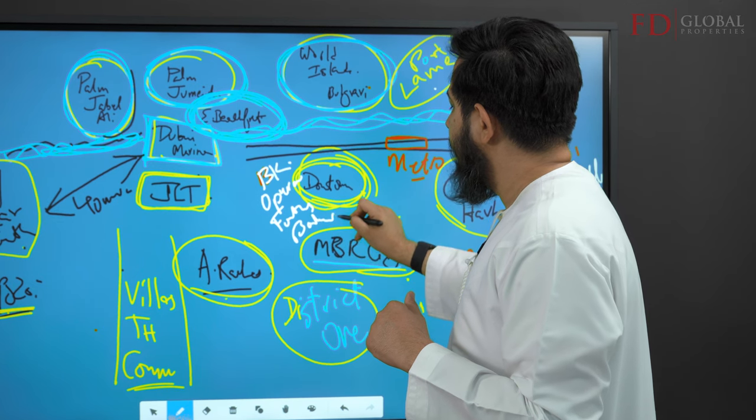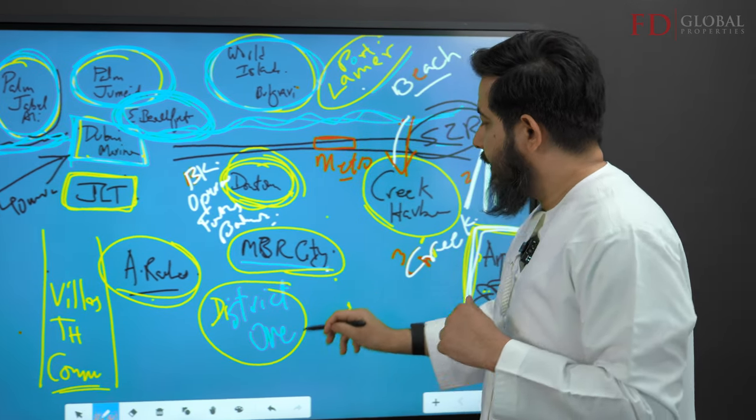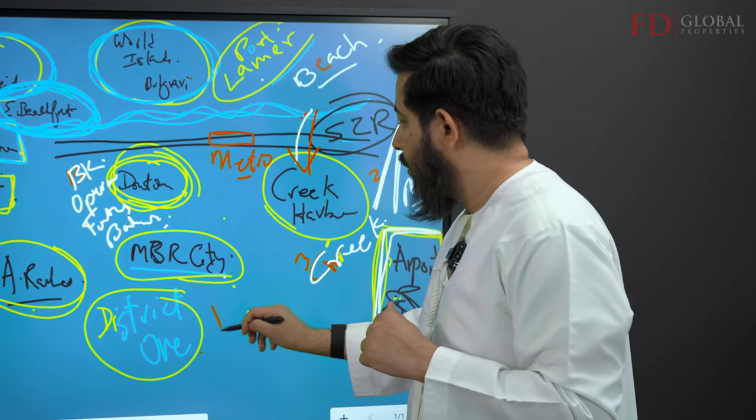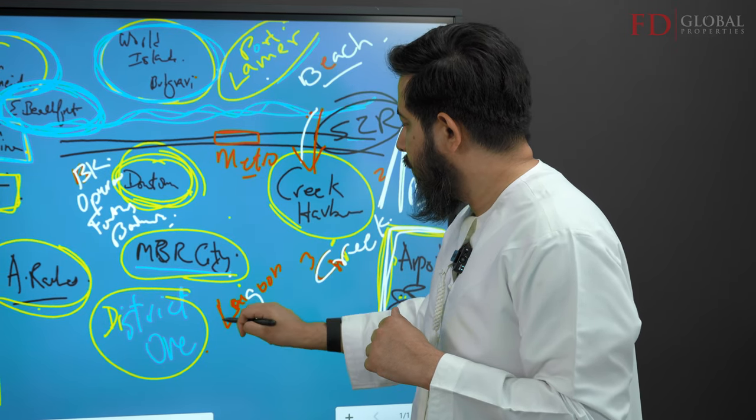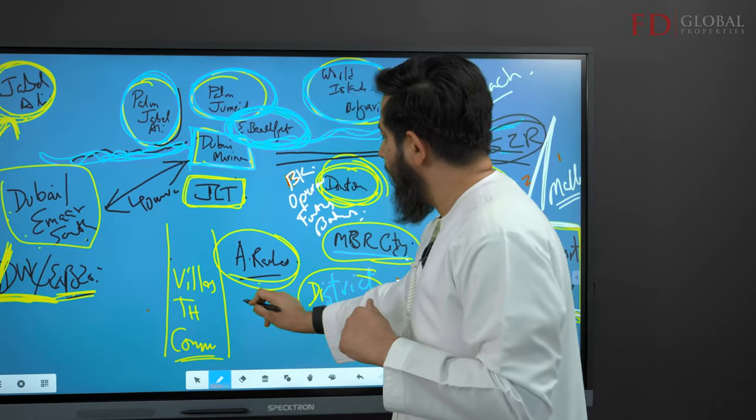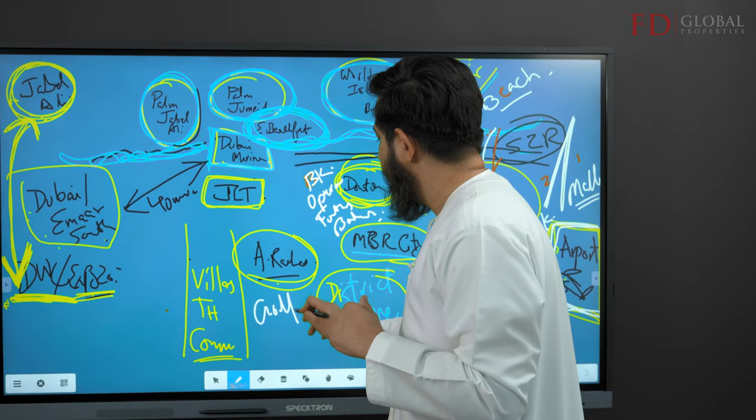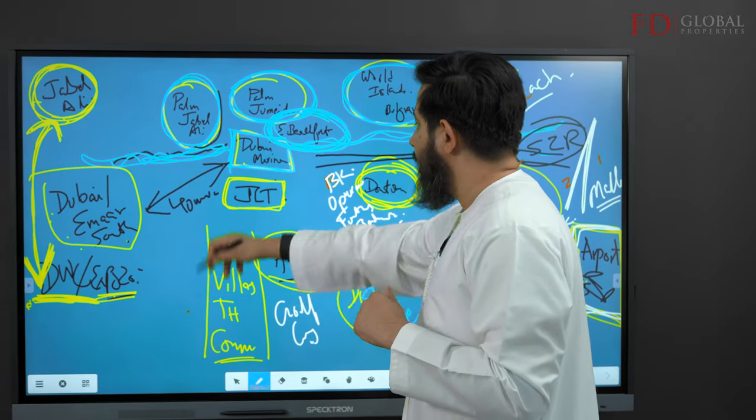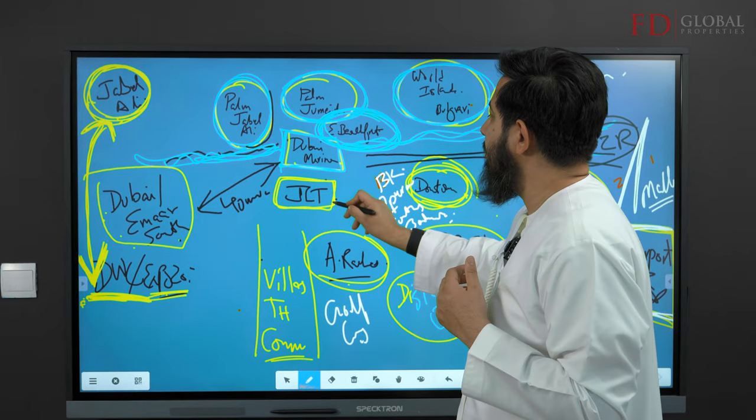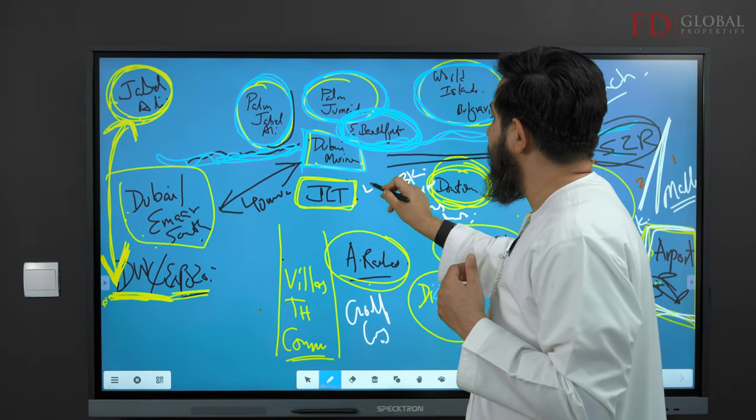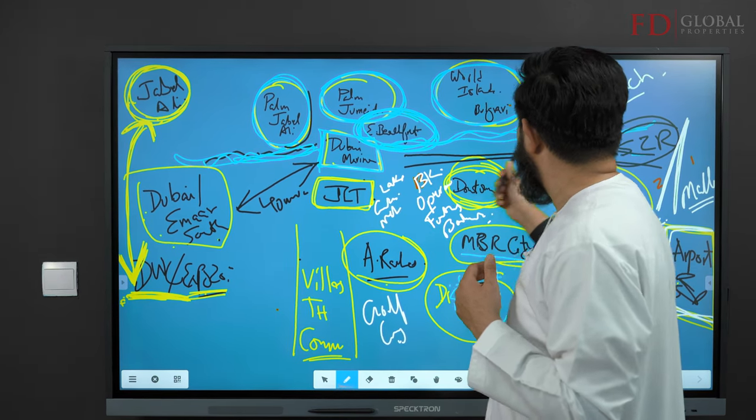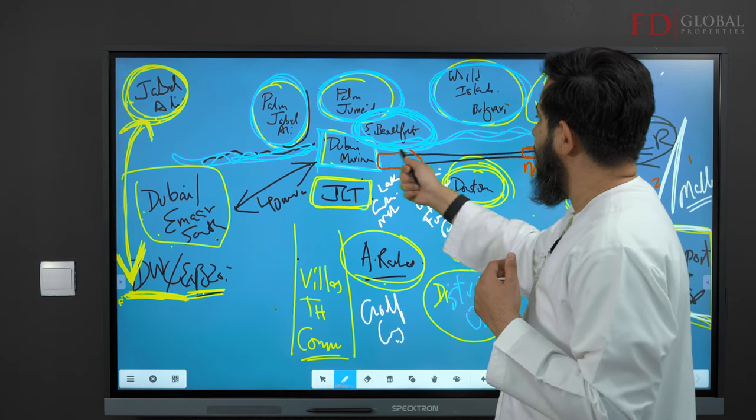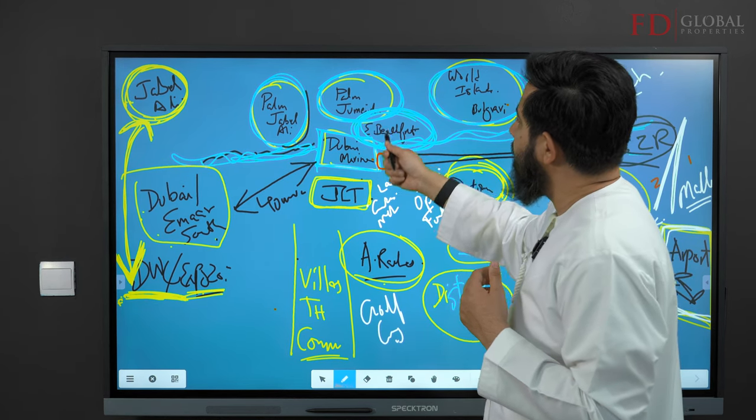It's got the Boulevard. MBR City and District One has a lagoon, a man-made lagoon called the District One Lagoon. Arabian Ranches has a golf course, and then the villa communities have very nice landscaping. JLT has lakes, gardens, and metro.